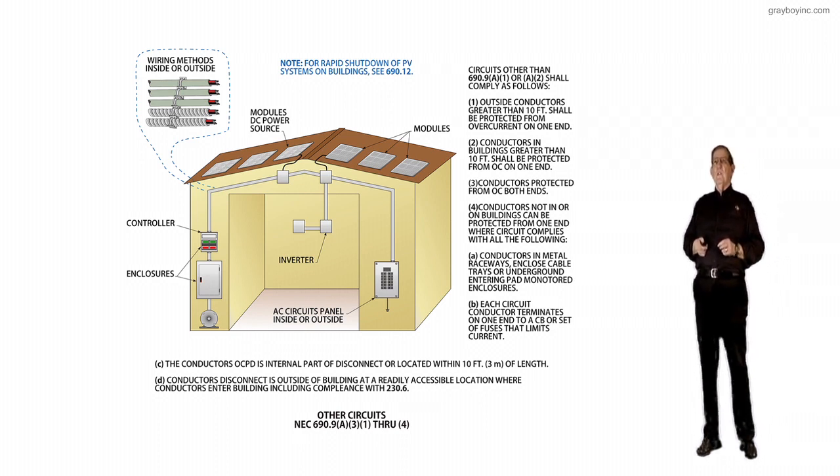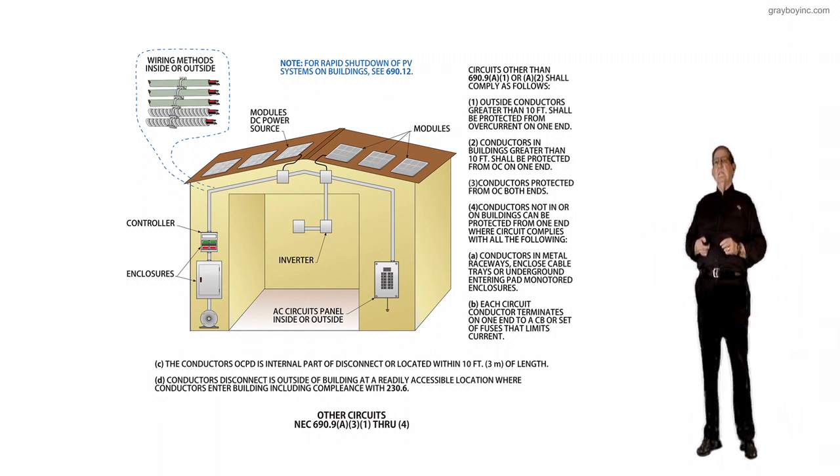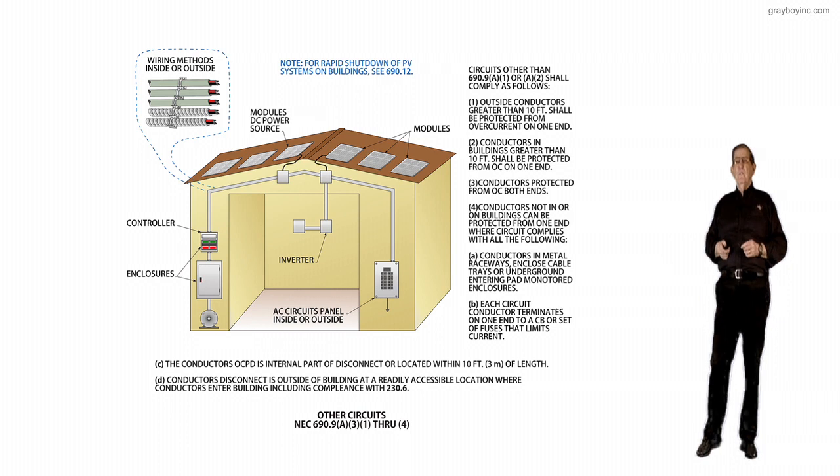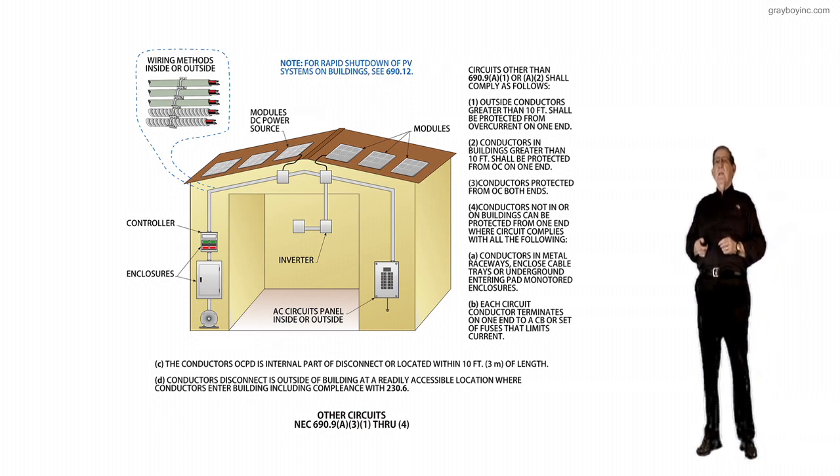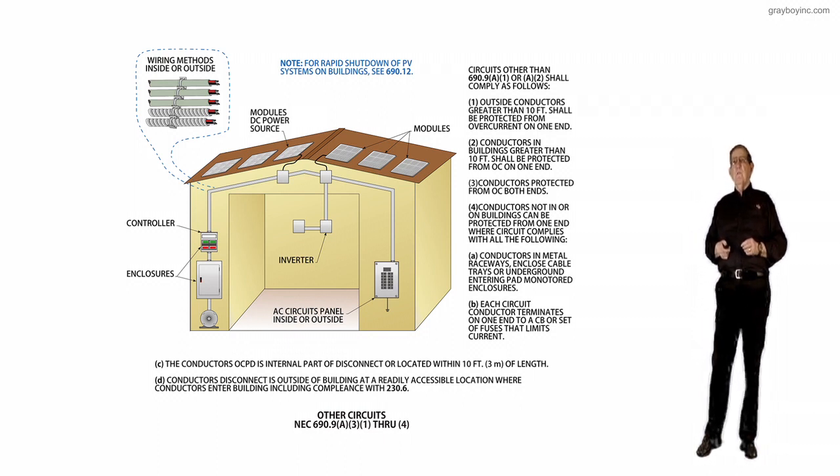Three, conductors protected from overcurrent on both ends would be required to be done so by this new subsection. Then notice four, conductors not in a building can be protected from one end where the circuit complies with all of the following.